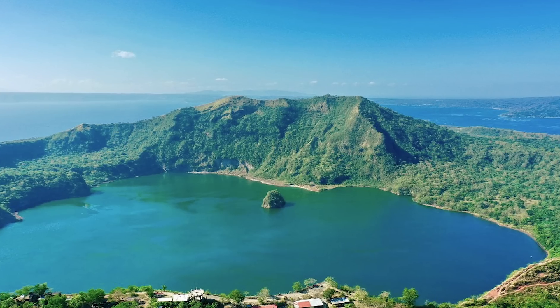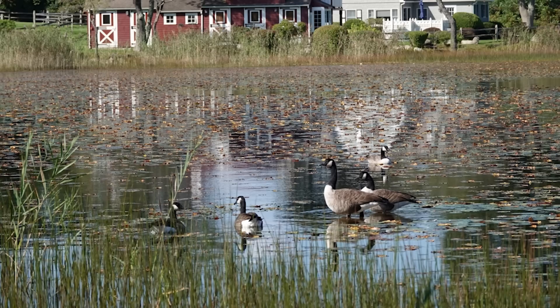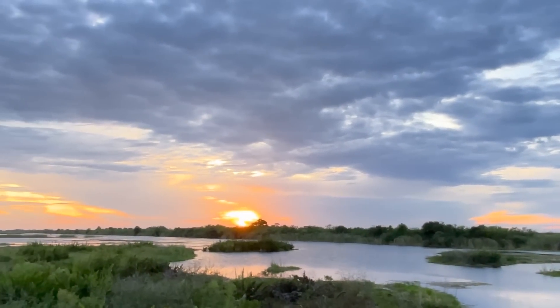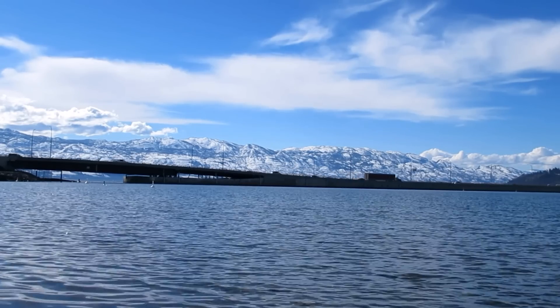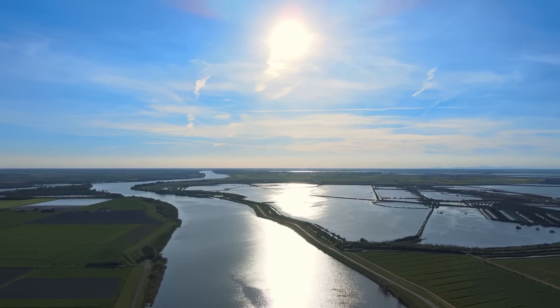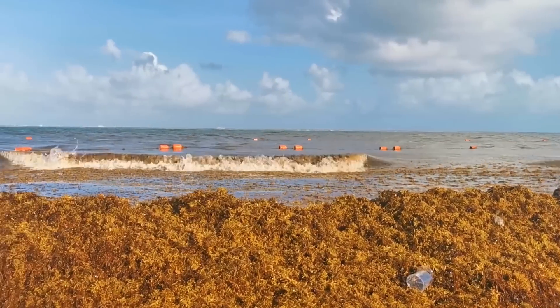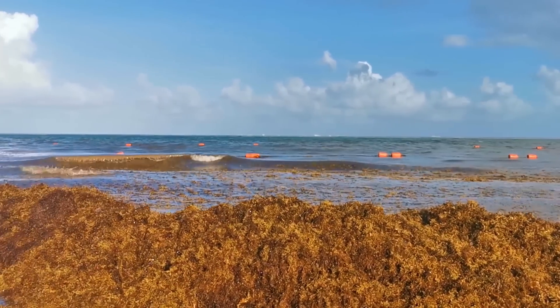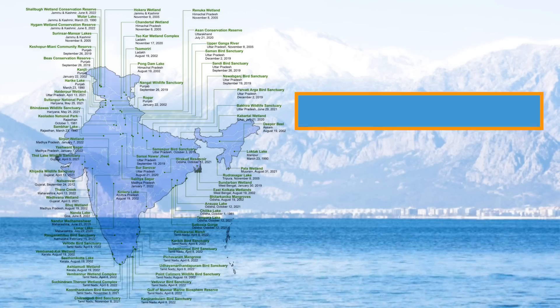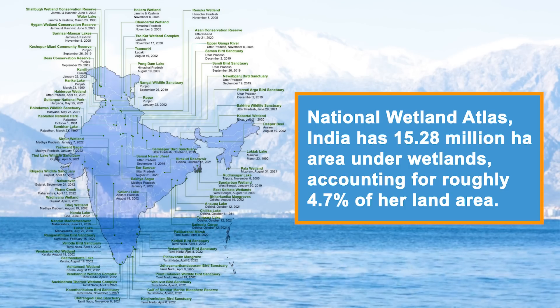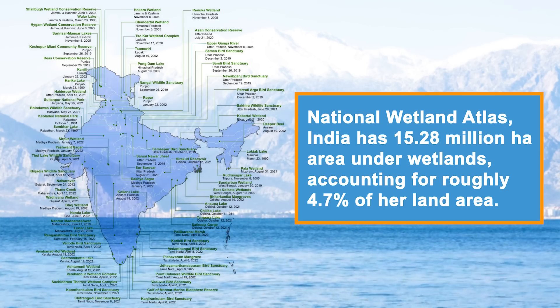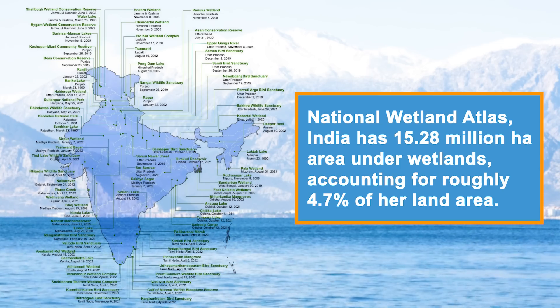In India, wetlands are known by several colloquial terms such as sarovar, tal, jeel, chaur, maun, path, beel, sherubu and many others. Wetlands range from the high altitude lakes of the Himalayas, flood plains and marshes of the Ganga and Brahmaputra alluvial plains, to saline flats of the great Indian desert and extensive marshes and coral reefs along the coastline. As per the National Wetland Atlas, India has 15.28 million hectares under wetlands, accounting for roughly 4.7% of her land area.